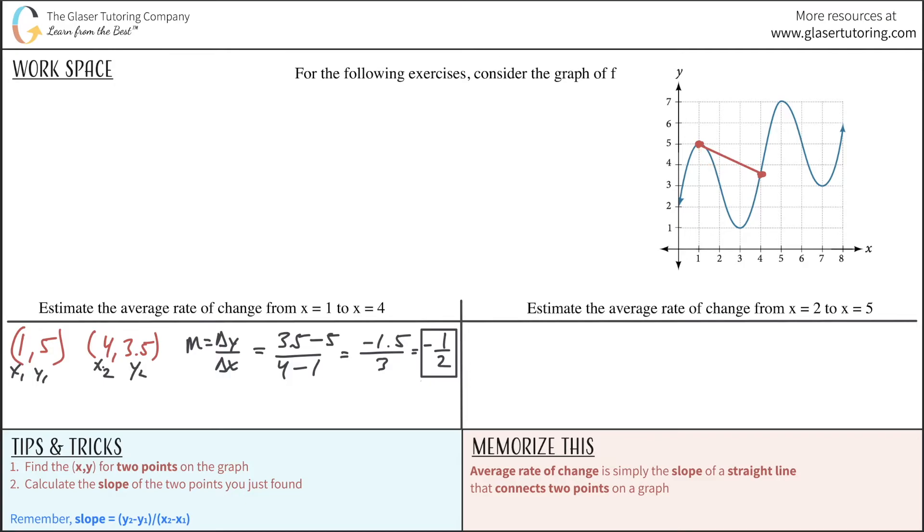Now, let's take a look at the next question. It's just as easy. Estimate the average rate of change again from x equals two to five. So let's see how fast we can do this. So we go out to two, go up to find the point on the graph. There's the point.